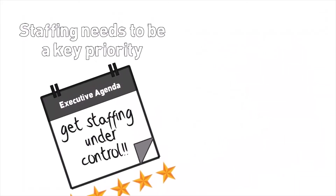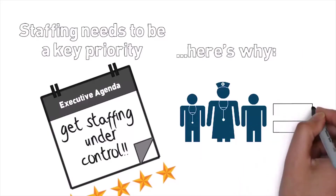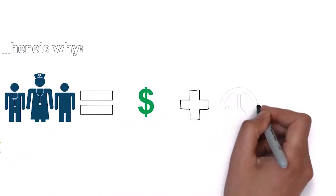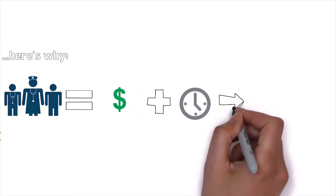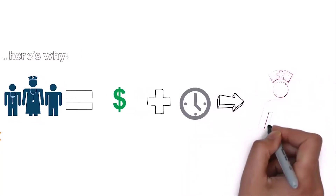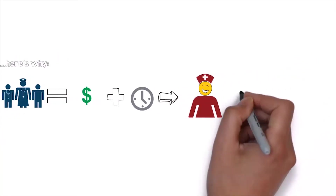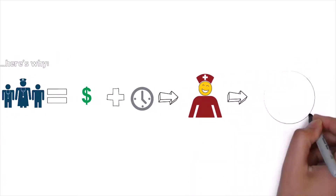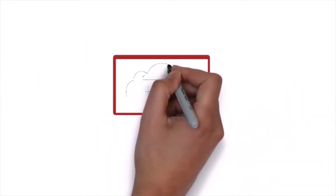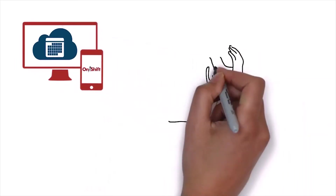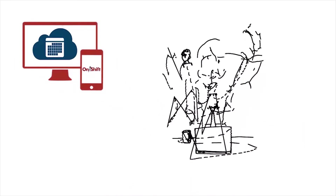Scheduling the right people at the right place at the right time can lead to all kinds of wonderful things. Labor costs are under control. Staffing is consistent and efficient. This makes your staff happy and allows them to focus more on patients and residents and get to know them better, which leads to higher quality care and service excellence. And OnShift can help with staff scheduling and labor management software that turns your workday from this to this.